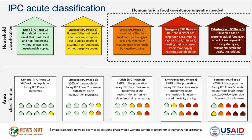This is the IPC 3.0 area-level phase classification scale. There are five phases, with phase 1 being minimal and phase 5 being famine. For an area to be classified in a phase, at least 20% of the population must be classified at that phase. In phase 3, households start facing food consumption gaps or begin engaging in unsustainable coping strategies. For phase 3 and higher, humanitarian food assistance is needed. We denote an exclamation point in our mapping where phase classification would likely be at least one phase worse without current or programmed humanitarian assistance. In our remote monitoring countries, the country phase classification is determined by the worst area-level classification within that country.